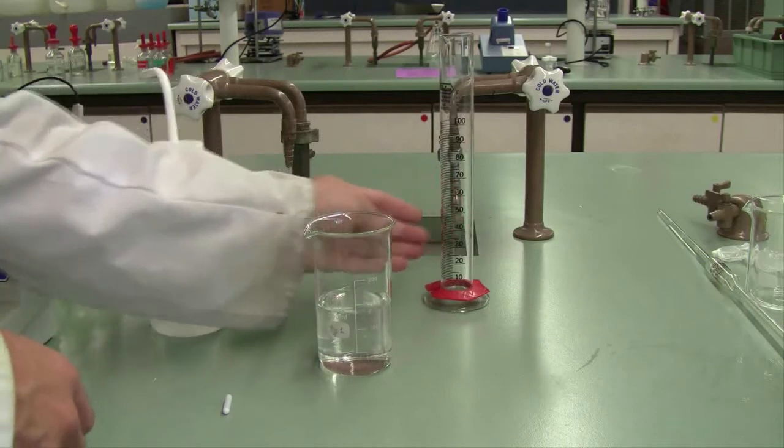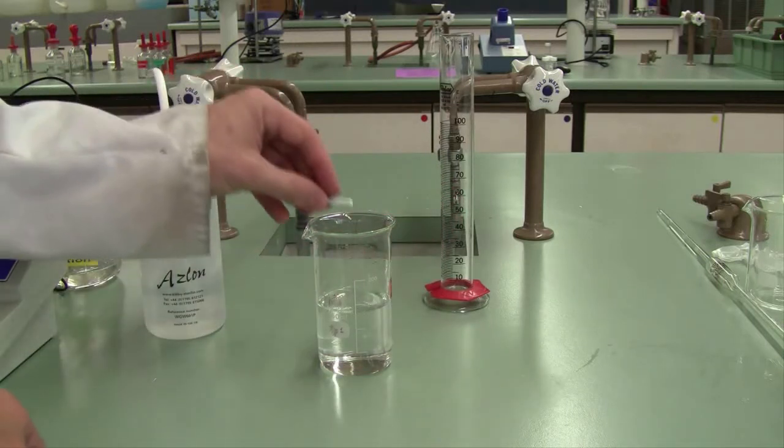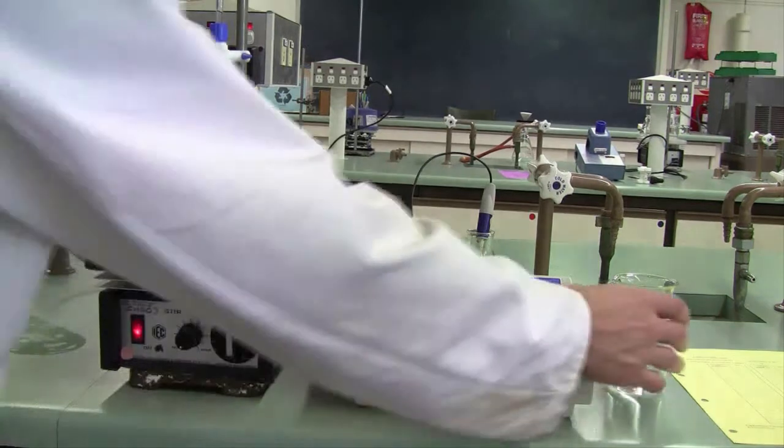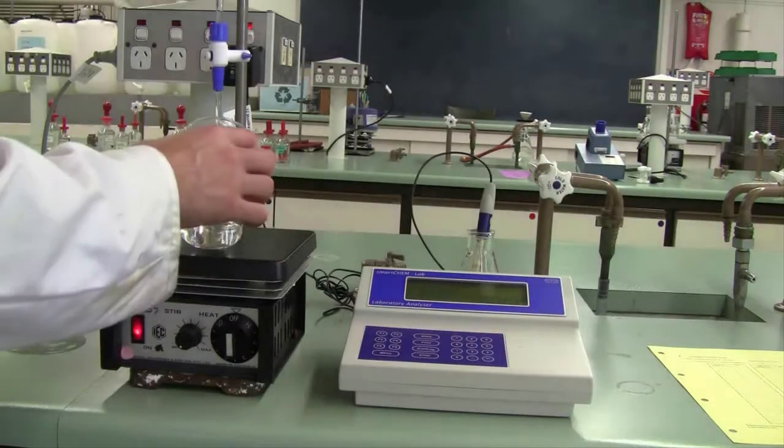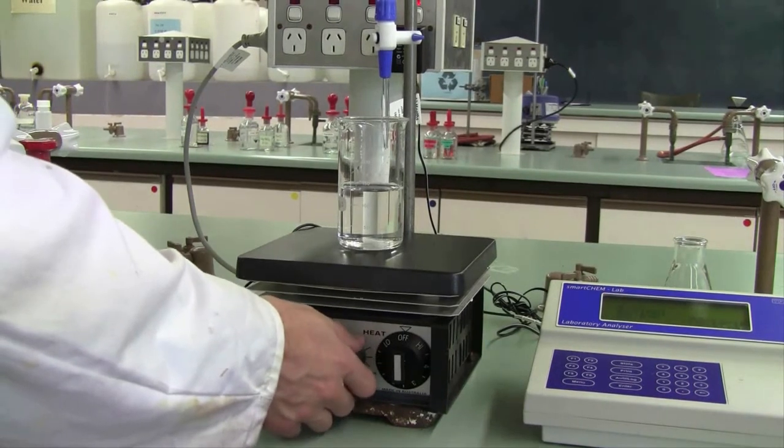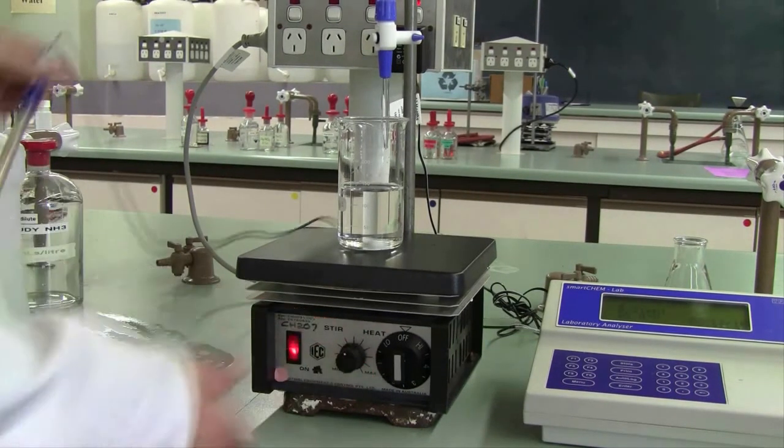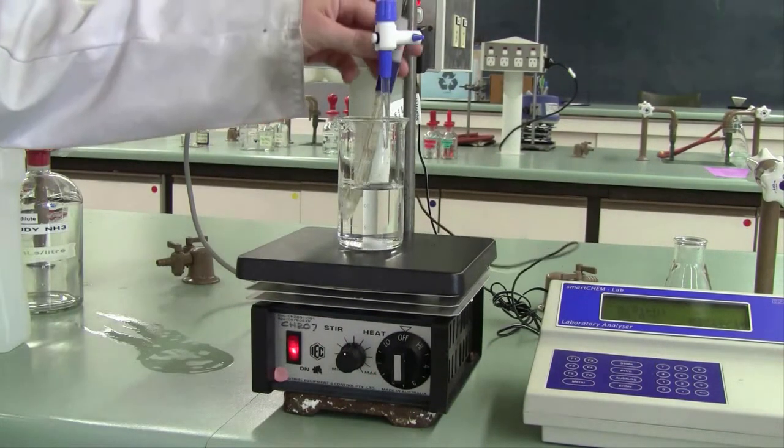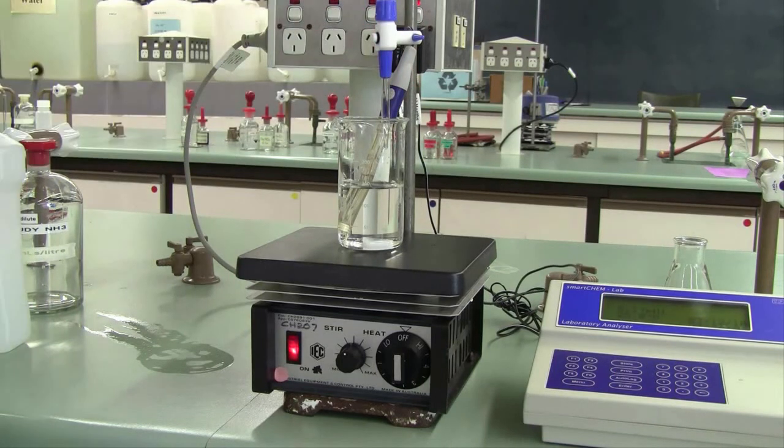Pop your magnetic stirrer bar into the solution and then complete your setup according to this picture here. Place your sample underneath the burette, turn on your stirrer, make sure it's not spinning into the side of your flask, and lastly, place your pH electrode in the solution. Make sure it's not in the path of the burette and also not in the way of the magnetic stirrer bar.